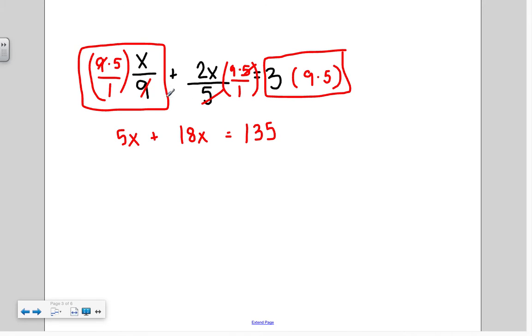So my new equation is 5x plus 18x equals 135. I can combine like terms here. I have 5x plus 18x, which is going to give me 23x is equal to 135. And then I'm going to divide by 23.